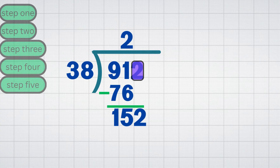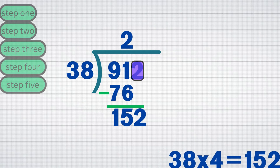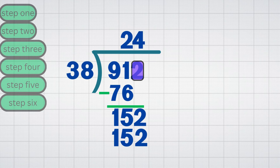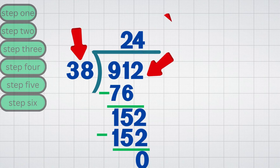Step 5: Divide again. 38 fits into 152 exactly 4 times, because 38 multiplied by 4 equals 152. Write 4 in the quotient next to 2. Step 6: Multiply and subtract. Multiply 4 by 38 equals 152. Subtract: 152 minus 152 equals 0, no remainder. Final answer: 912 divided by 38 equals 24.